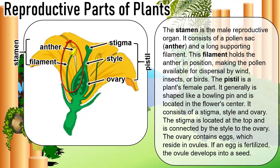The stamen is the male reproductive organ. It consists of a pollen sac, anther, and a long supporting filament. This filament holds the anther in position, making the pollen available for dispersal by wind, insects, or birds. The pistil is a plant's female part. It is generally shaped like a bowling pin and is located in the flower's center. It consists of a stigma, style, and ovary. The stigma is located at the top and is connected by the style to the ovary. The ovary contains eggs, which reside in ovules. If an egg is fertilized, the ovule develops into a seed.